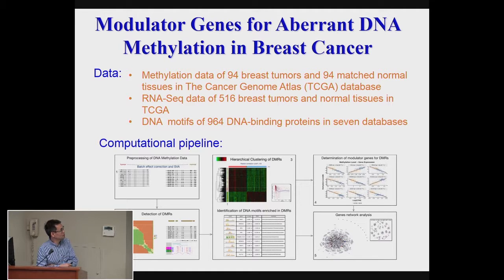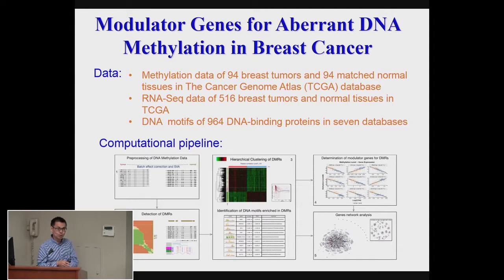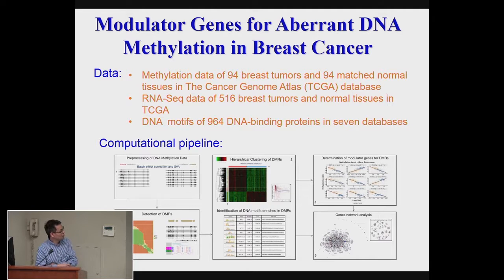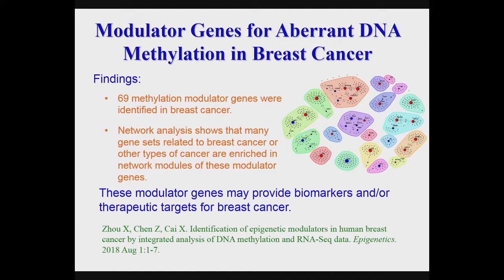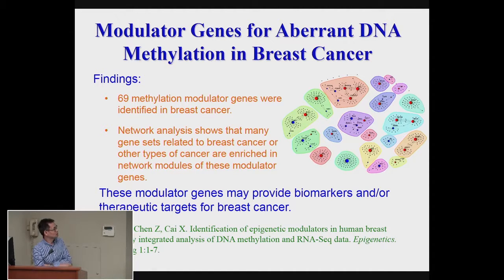We did first data processing, then we identified differentially methylated regions. Then we found those DNA motifs that proteins can bind into — potentially, these proteins binding to these motifs cause methylation changes. After we find those binding proteins, we correlate the expression of those proteins or genes with the methylation level. Eventually, we found a set of 698 genes that potentially cause methylation dysregulation.